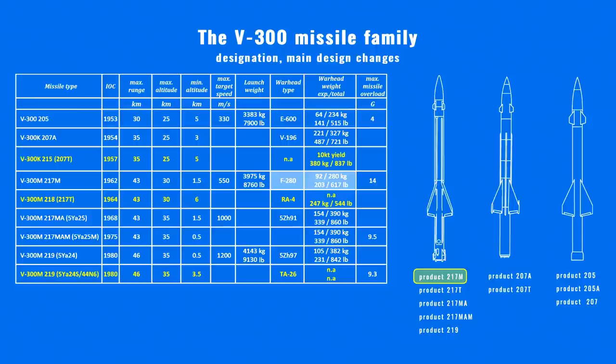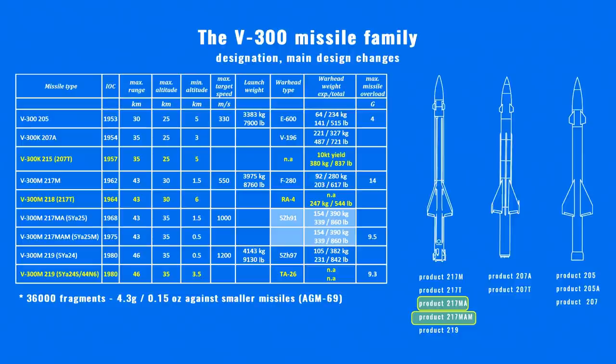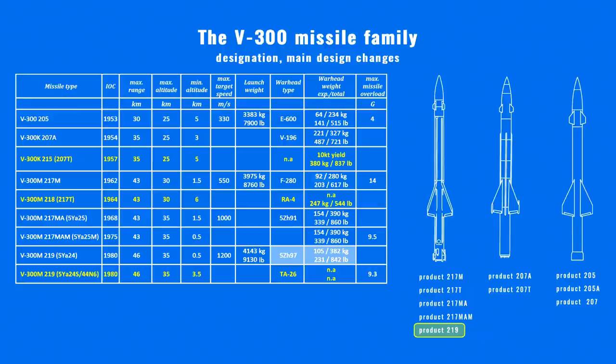The 217M missile type had an E280 type warhead weighing 280 kg, with 18,500 small fragments each weighing 5 grams. The 217MA and MAM types had a 390 kg warhead with 36,000 fragments of 4.3 grams each. The shrapnel density was better against smaller targets, like the US AGM-69 short-range air-to-ground missile, which could be used in a semi-ballistic or low-level flight profile. The last 219 missile type had the 5ZH-97 warhead with 32,000 fragments weighing 3.3 grams each.